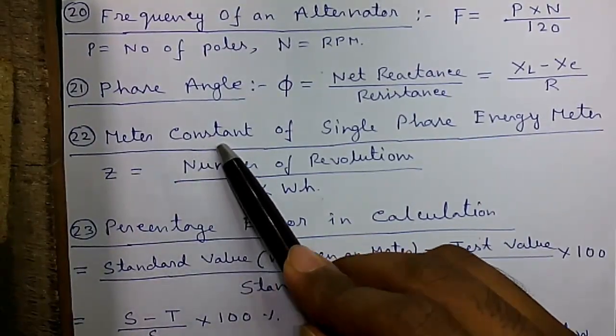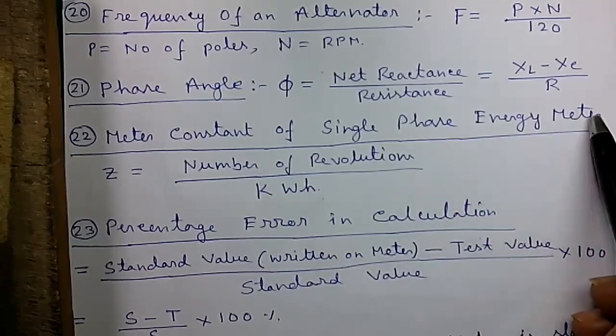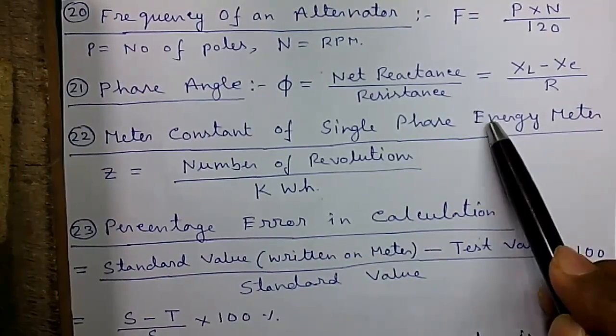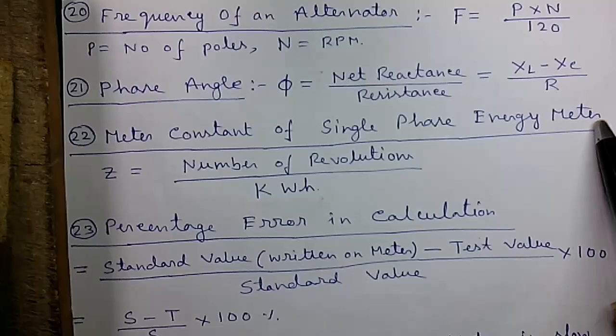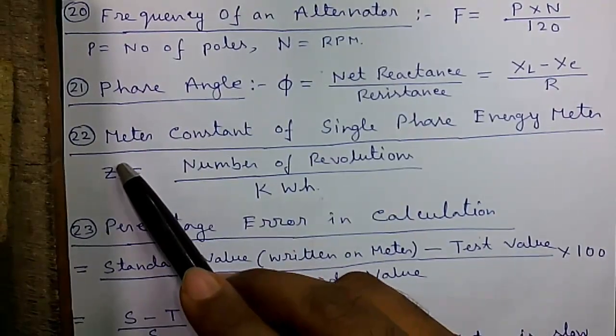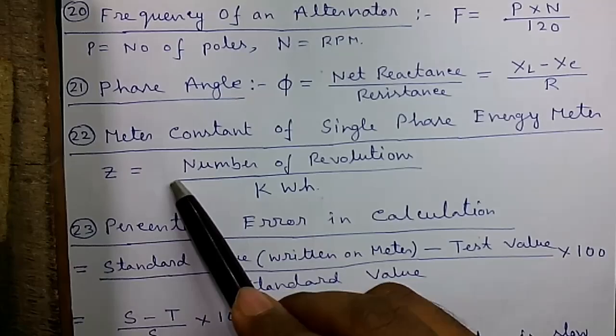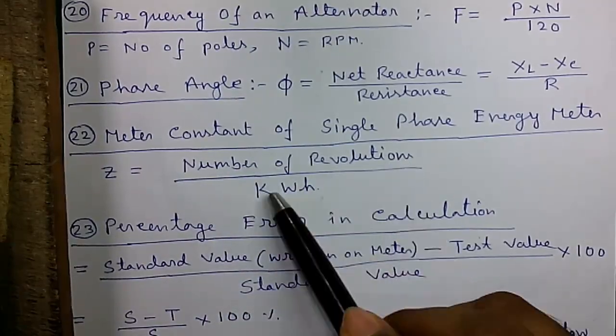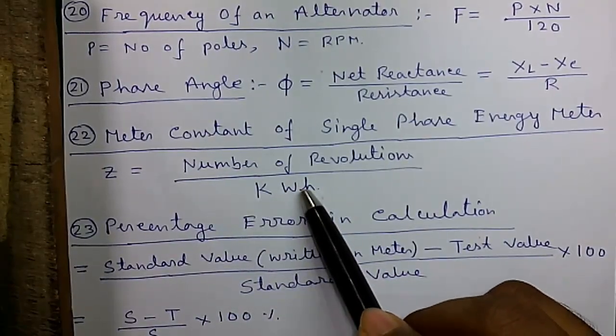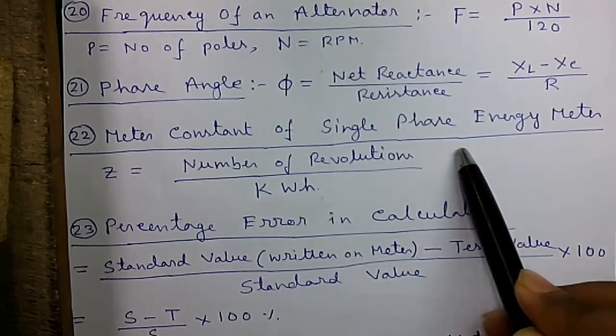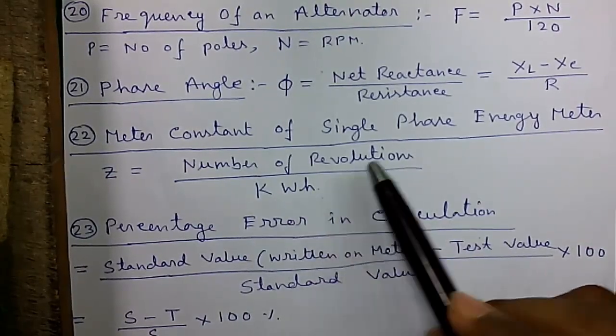Formula 22: Meter constant of single phase energy meter. This is used to measure electrical energy consumed in our household. That is represented by Z equals number of revolutions by kilowatt hour. Number of revolutions of the disc which is inside the meter by kilowatt hour consumed.